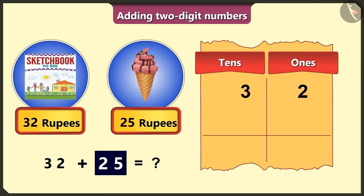Then, from twenty-five, number five comes last. So, five in the ones box and two comes first. So, we will write it in the tens box.